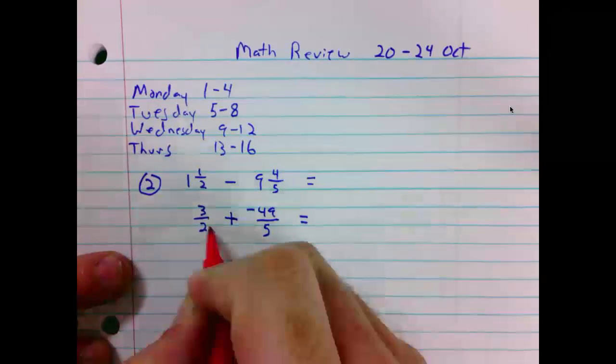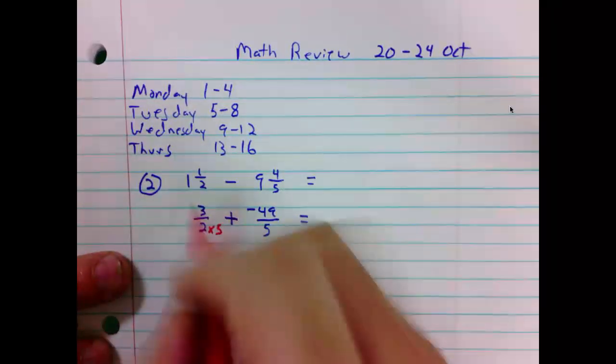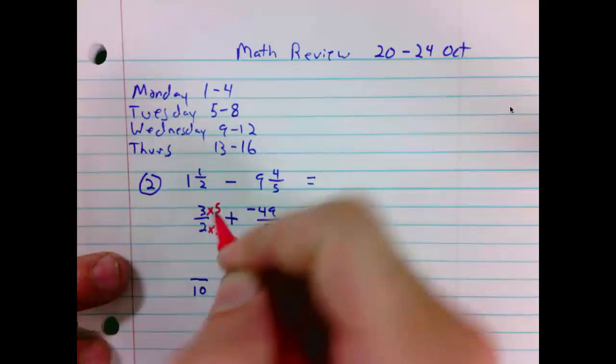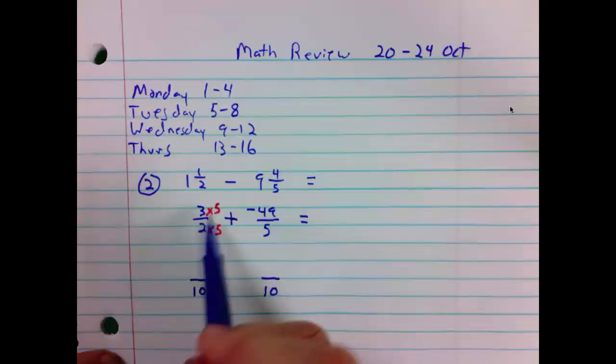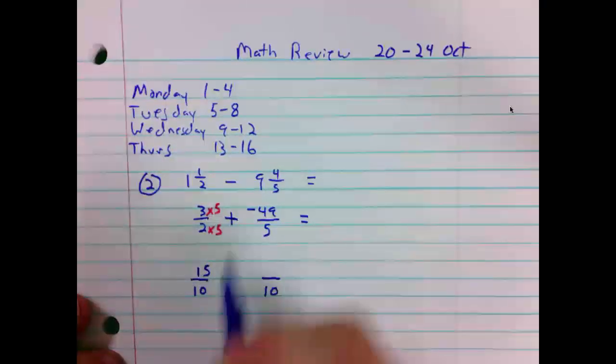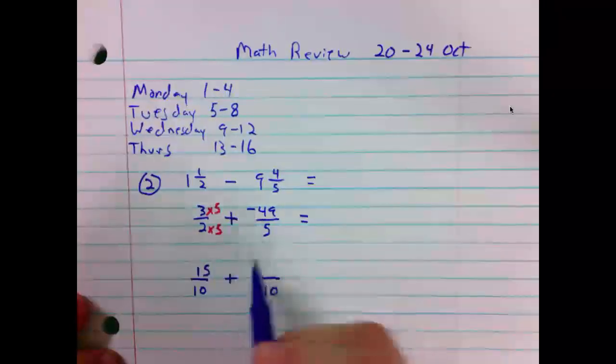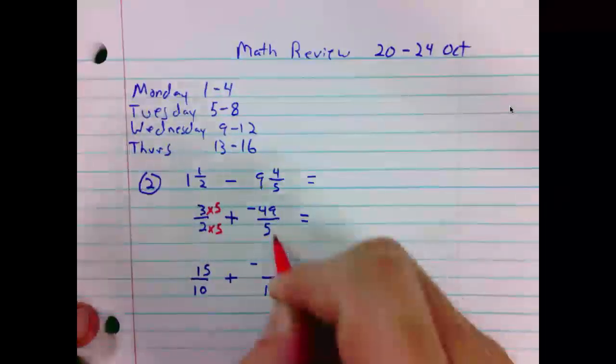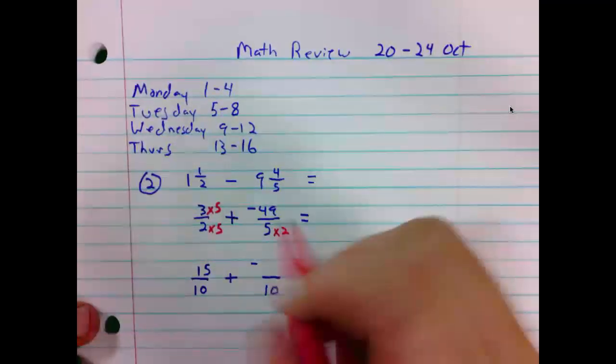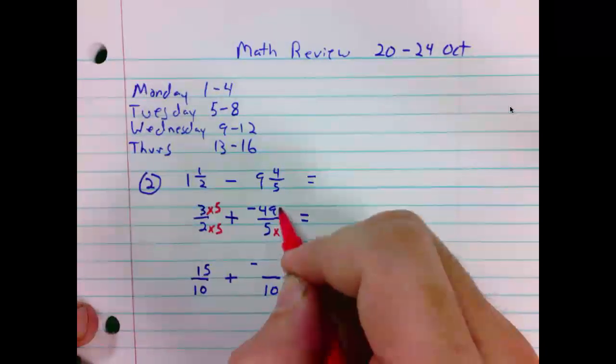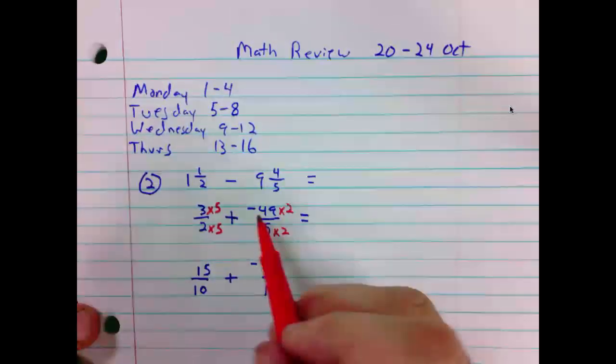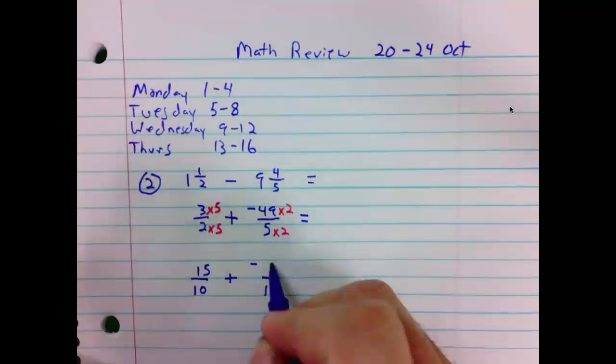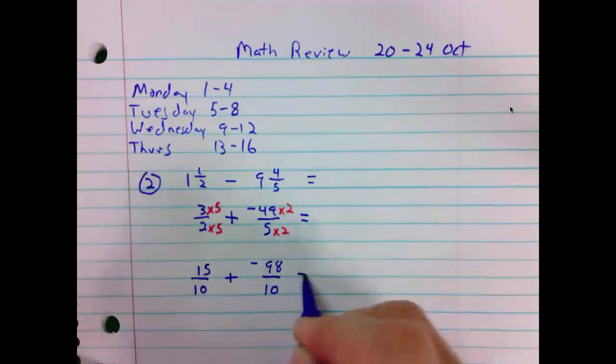Since we multiply the denominator by 5, we must multiply the numerator by 5 as well. 3 times 5 is 15. 3 over 2 is equal to 15 over 10 plus a negative. 5 times what yields 10? 49 times 2. 49 times 2 is 98. Use scratch paper if necessary. So now we are ready to sum.